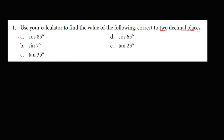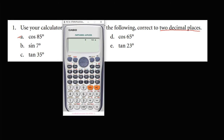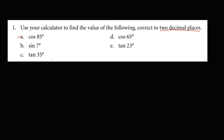For cosine 85 degrees, we have cosine 85 degrees equals — to only two decimal places — that's 0.09. So cosine 85 is equal to 0.09.